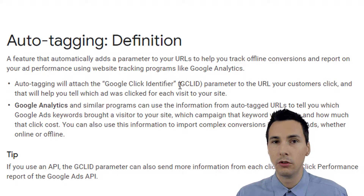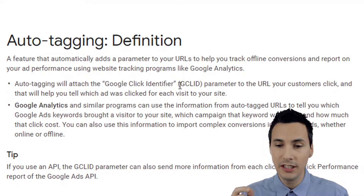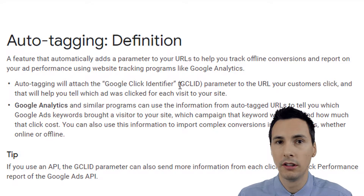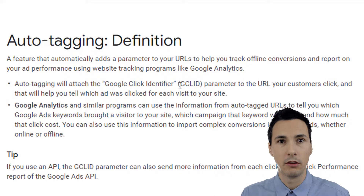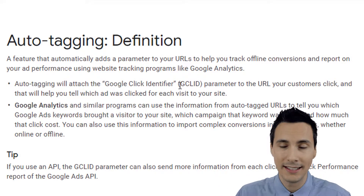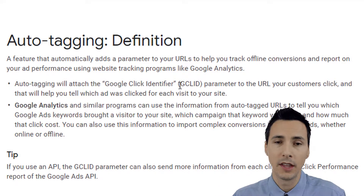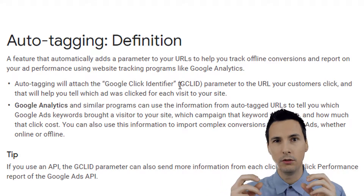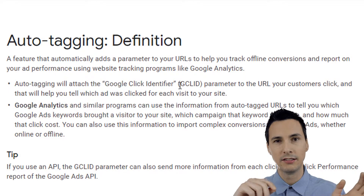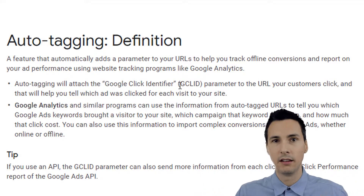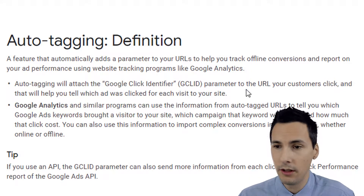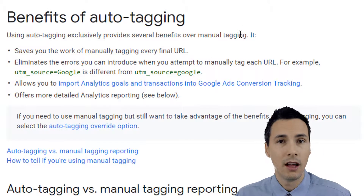I want to explain what the Google Click ID — also known as the GCLID — is. If you ever see a URL that has 'GCLID equals' and then some random characters of about up to a hundred characters, that's the Google Click ID. It's a unique identifier that has a whole bunch of information packed into it, and Google Ads sends that to Google Analytics to unpack and put into reports.